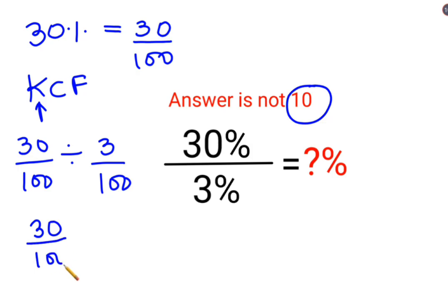C stands for changing the division sign to multiplication. F stands for flipping or taking the reciprocal of 3 upon 100, which is 100 upon 3.